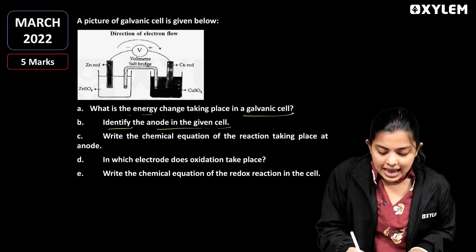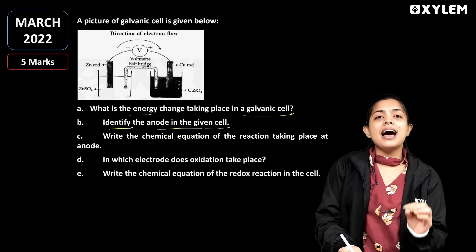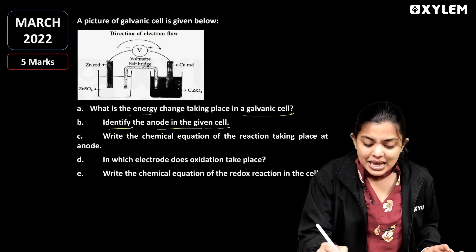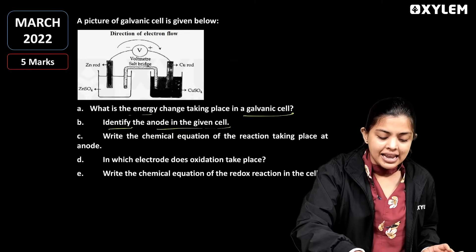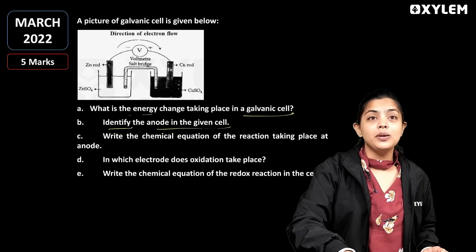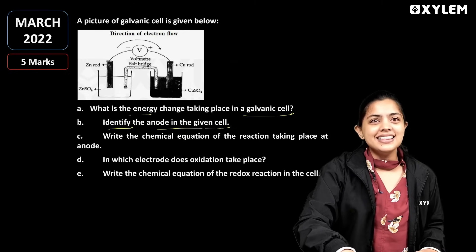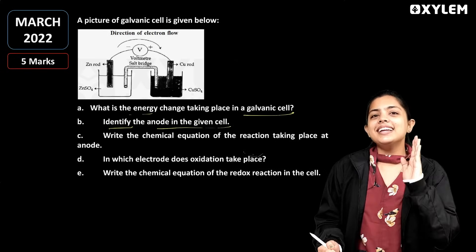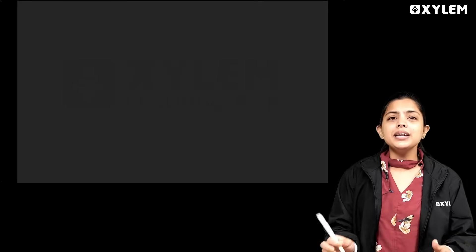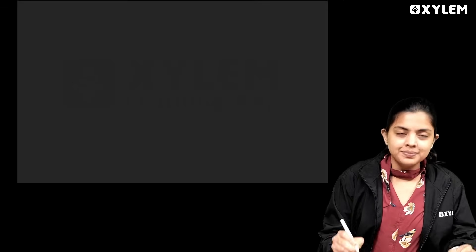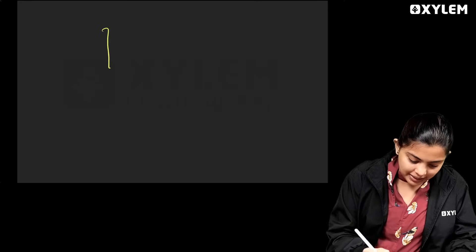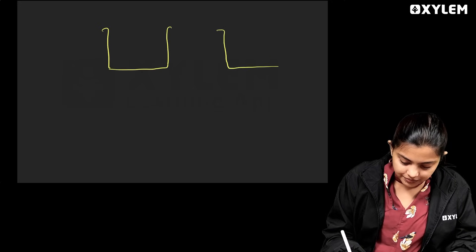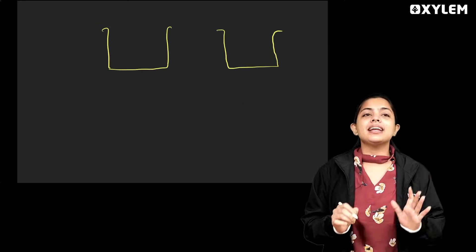Next: identify the anode in the given cell. Basically, we have taken a galvanic cell. We have seen this galvanic cell — what the galvanic cell is, what the reaction is. I am using two beakers; the two beakers are the galvanic cell construct.